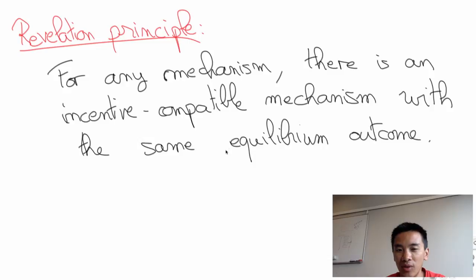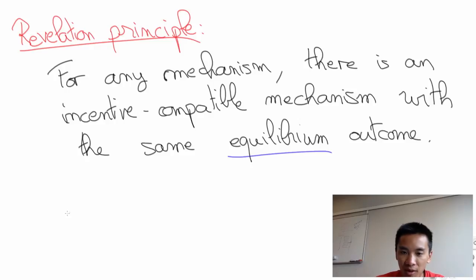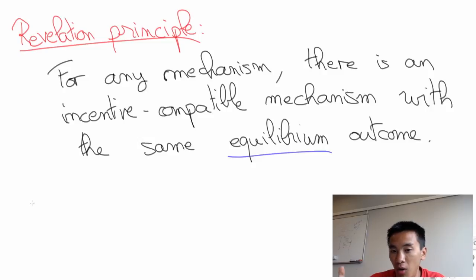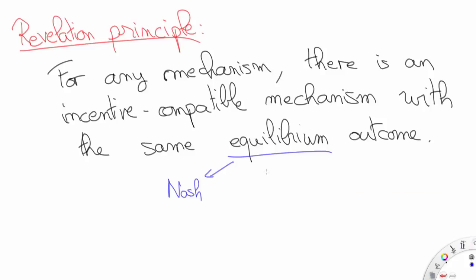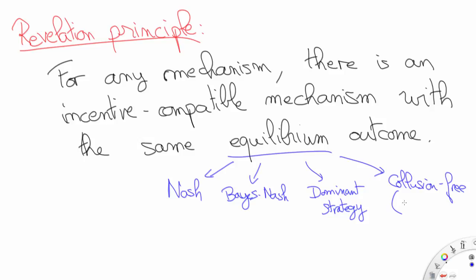Now there are a few subtleties I need to dwell on. First is the notion of an equilibrium. I have been purposely vague here, but in game theory there are actually several equilibrium concepts. The most popular of them all is probably the Nash equilibrium, which is a setting where every agent behaves optimally with respect to the other agents' behaviors. Then there is the Bayes-Nash equilibrium. We may also consider dominant strategy equilibrium or collusion-free equilibrium, and so on.